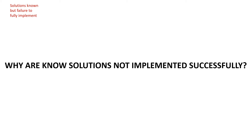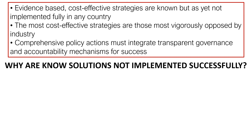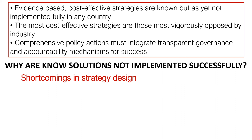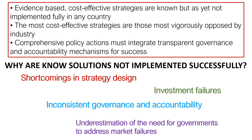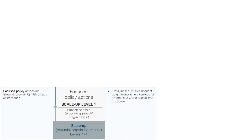Why are known solutions not implemented successfully? One reason is that the most cost-effective strategies are also those most vigorously opposed by industry. Another is that comprehensive policy must integrate transparent governance and accountability mechanisms. Typically we have shortcomings in strategy design, investment failures, inconsistent governance and accountability, and underestimation of the need for government to address market failures — four flaws in our implementation of what we already know.